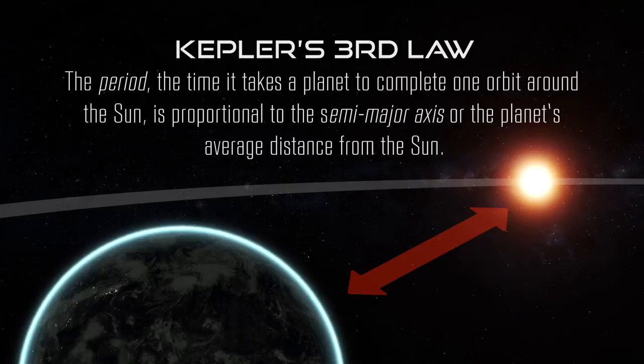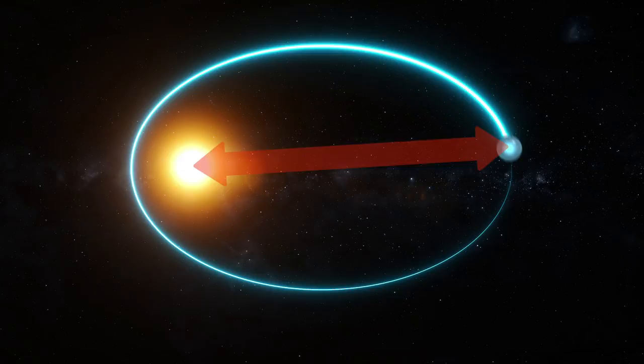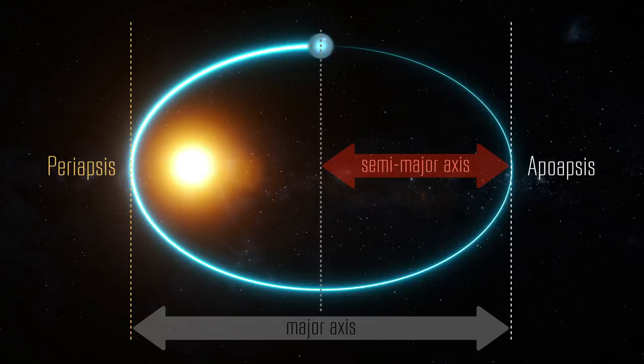Kepler's third law states that the period — the time it takes a planet to complete one orbit around the sun — is proportional to the semi-major axis, or the planet's average distance from the sun. More specifically, the planet's period squared is proportional to the semi-major axis cubed. To better explain semi-major axis, let's go back to the example we used in Kepler's first law. The semi-major axis is the planet's average distance from the sun, or more simply, just half the major axis, where the major axis is the distance from apoapsis to periapsis.